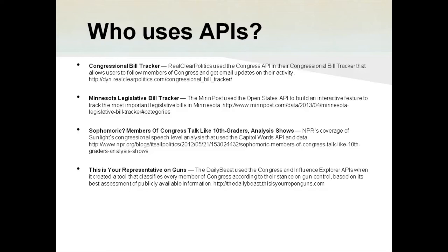Back in May of 2012, NPR covered Sunlight's Congressional Speech Level Analysis, where we gave members of Congress a letter grade — as in school letter grade, 10th grade, 12th grade — determining what level of speech they use in their official speeches in the congressional record. That analysis used our Capital Words API and the data that site provides. Also, this past year, the Daily Beast used both our Congress and Influence Explorer APIs and created a tool that helped members of the public get a better sense of where their member of Congress stands on gun control issues.